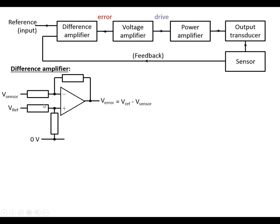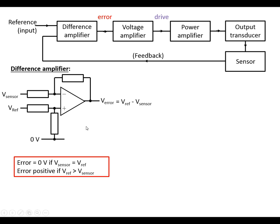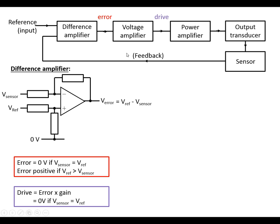Here's the difference amplifier circuit. We've got V sensor and V ref going into it. The error signal is V ref minus V sensor in this case, because we've got V ref going to the non-inverting input with a plus sign and V sensor going to the inverting input with a minus sign. The error signal is going to be zero when V ref and V sensor are the same, and if V ref is greater than V sensor it's going to be positive. The drive signal from the voltage amplifier is just the error signal multiplied by the gain, so when V sensor and V ref are the same it's going to be 0 volts.